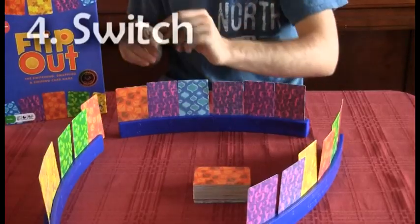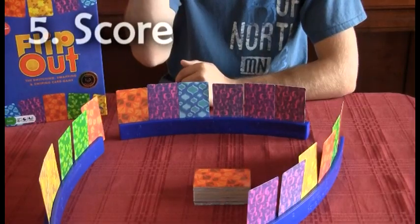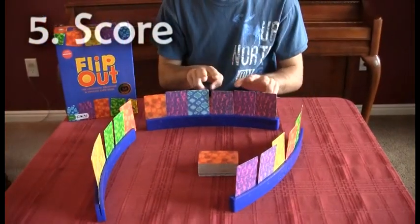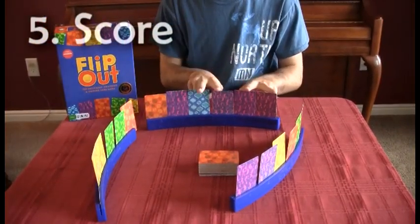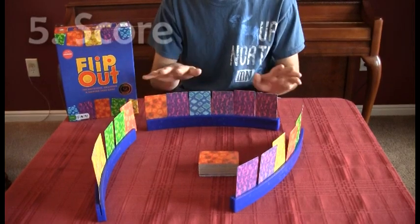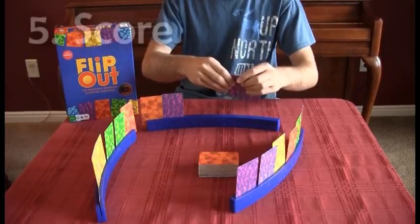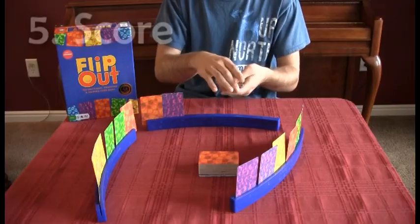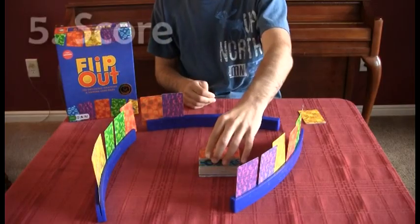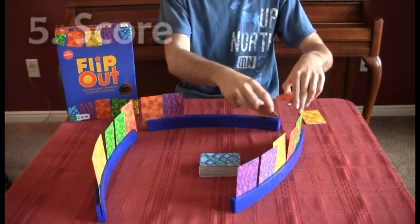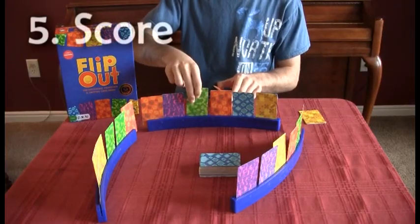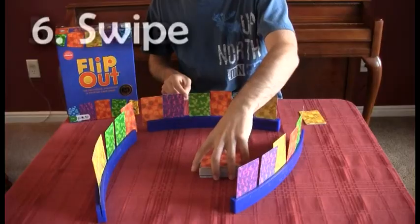The fourth one, switch cards in your own rack, is basically what it is - you just swap around two cards in your rack. The fifth one is score cards in your own rack. You can score four or more cards, and they have to be in a row. So if I have these four, five, or six, you just take these cards. They'd all have to be the same - they're not with mine, but they'd all be the same - and you put them in your score pile right here, or wherever you want to keep it, and you restock your rack.